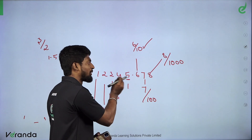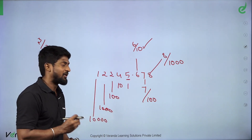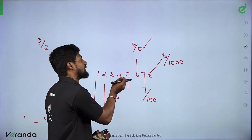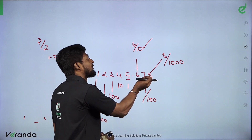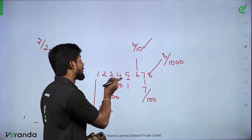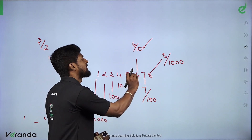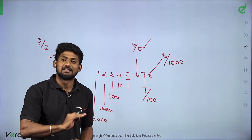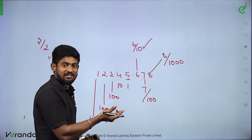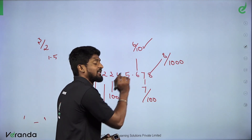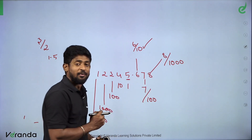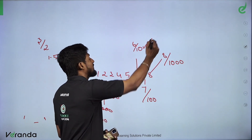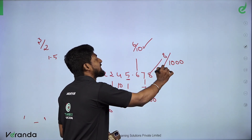So what we know is decimals: 1, 2, 3, 4, 5 — that number is ones, tens, hundreds, thousands, ten-thousands. Then 6, 7, 8 — this is 12,345.678. You can study the values: 6 is 6/10, 7 is 7/100, 8 is 8/1000 — that is the value.